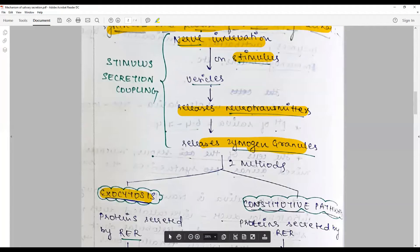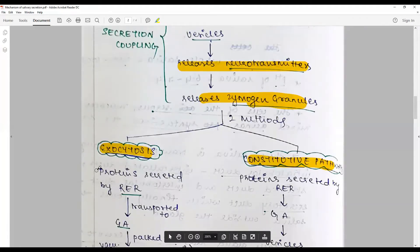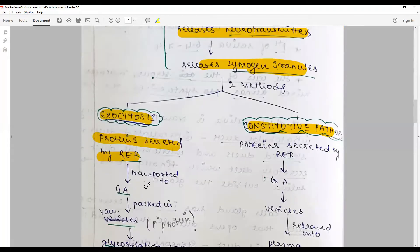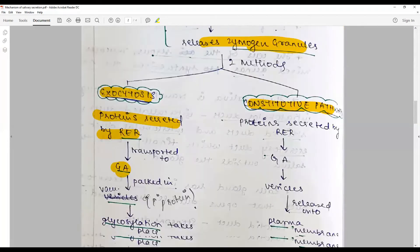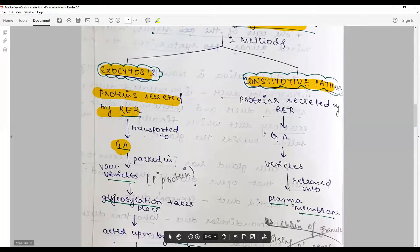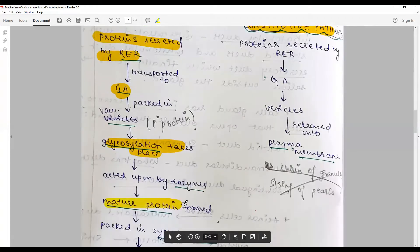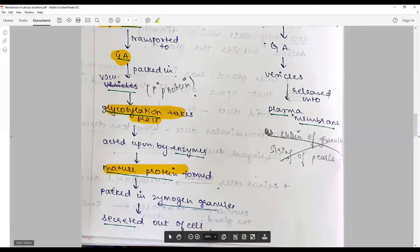In exocytosis, the proteins are secreted by the rough endoplasmic reticulum, transported via the Golgi apparatus, packed in as primary proteins. After which, the pre-proteins or the primary proteins undergo glycosylation and are acted upon by enzymes to release the mature protein, which is packed in the zymogen granule and secreted out of the cell.